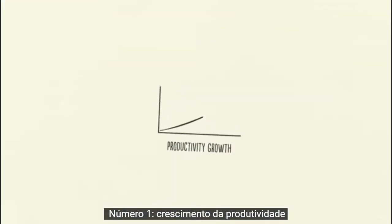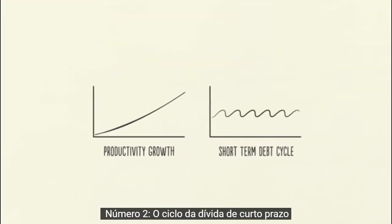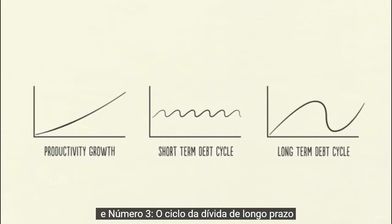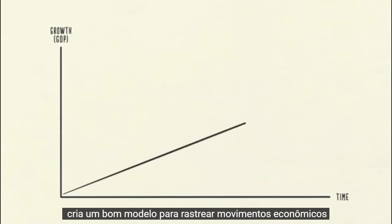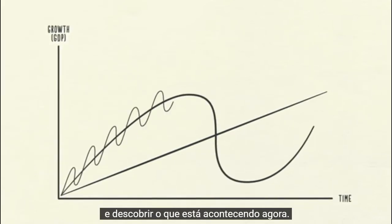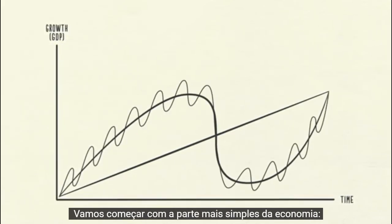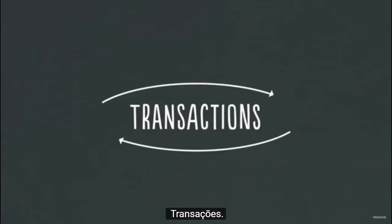Number one, productivity growth. Number two, the short-term debt cycle. And number three, the long-term debt cycle. We'll look at these three forces and how laying them on top of each other creates a good template for tracking economic movements and figuring out what's happening now. Let's start with the simplest part of the economy: transactions.